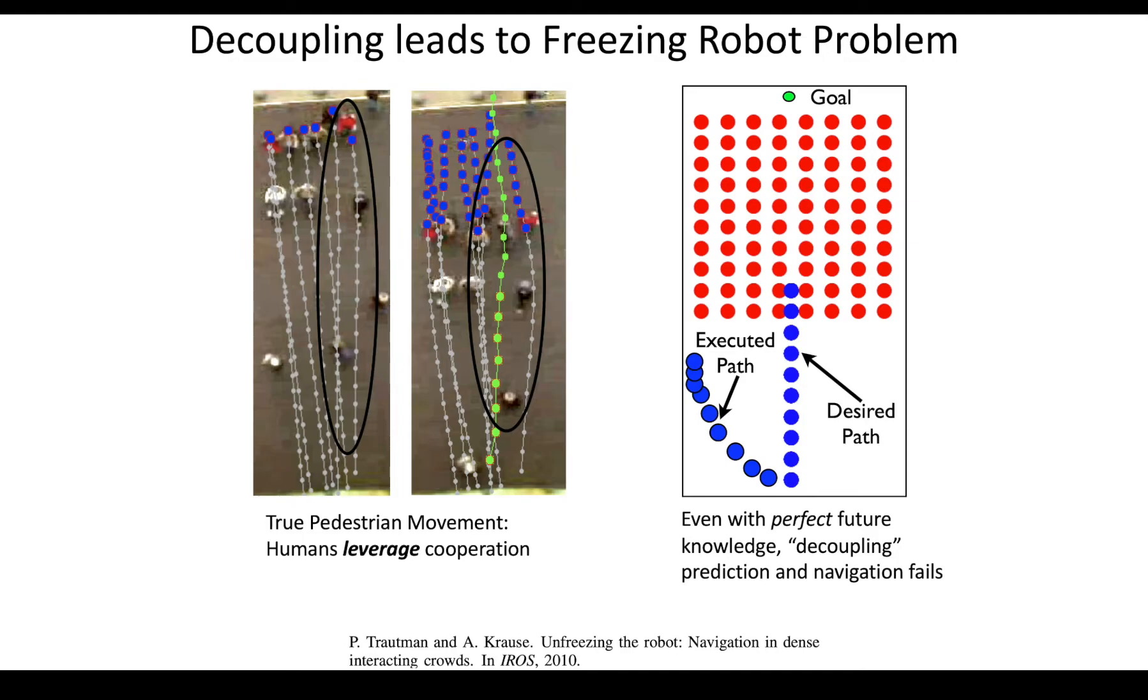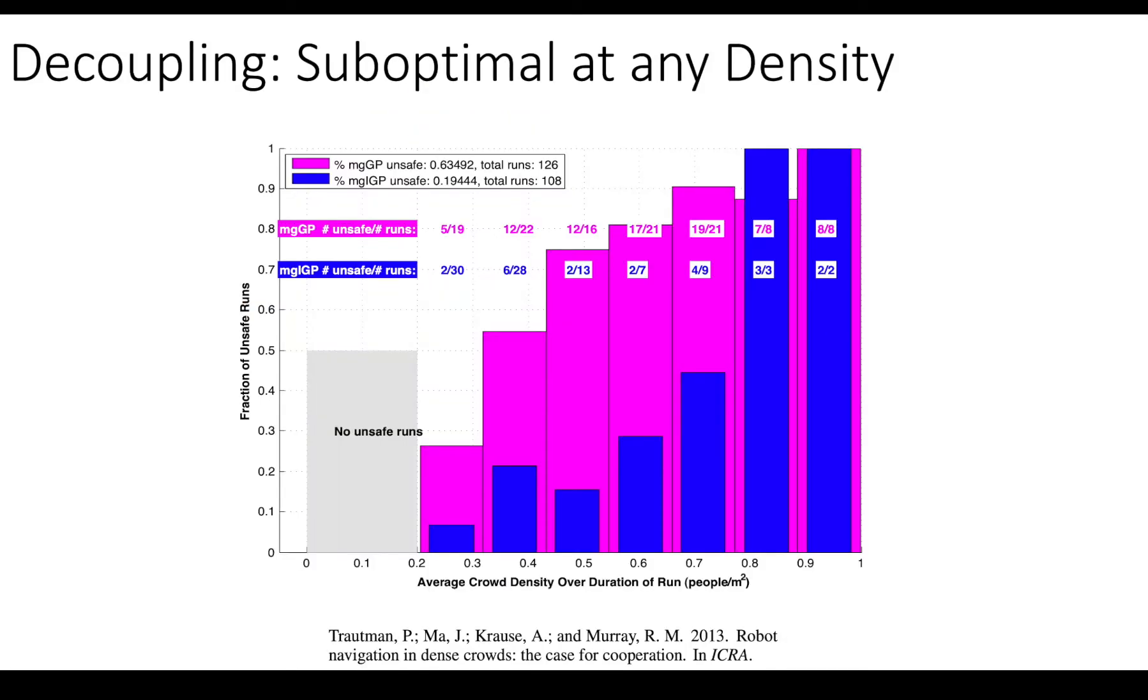And so what this leads to is what we call the freezing robot problem, where the robot will take extremely evasive maneuvers or just freeze in place. So there's also a different aspect to this freezing robot problem. The freezing robot problem is something that happens at high crowd densities that we know for sure.